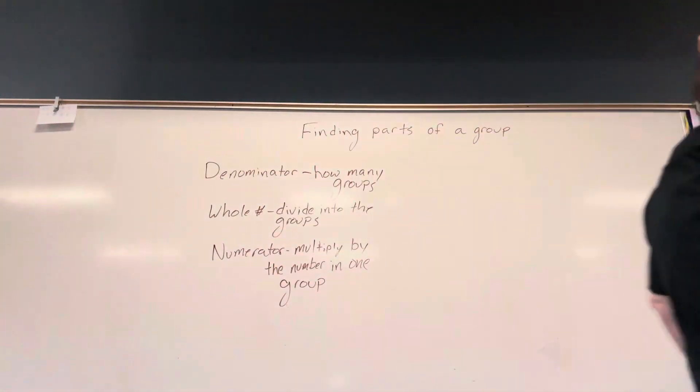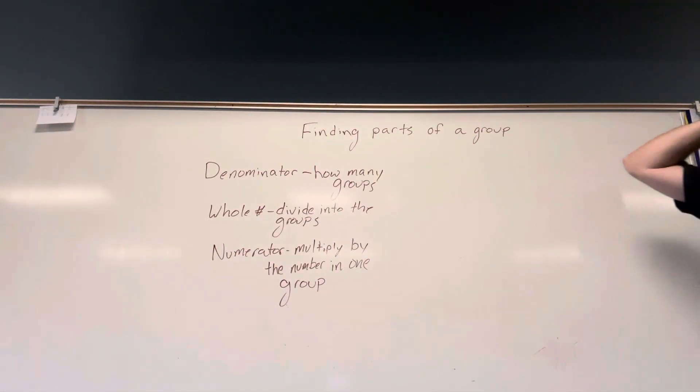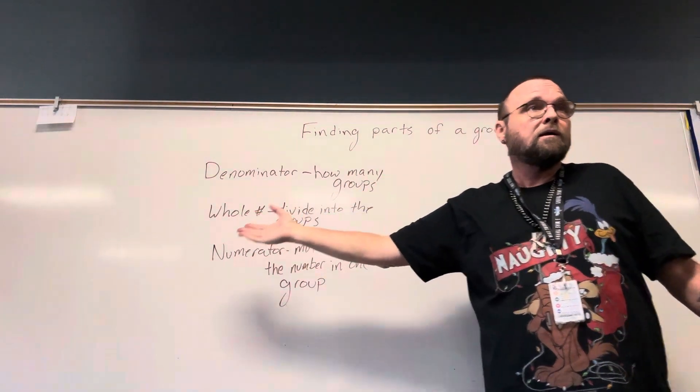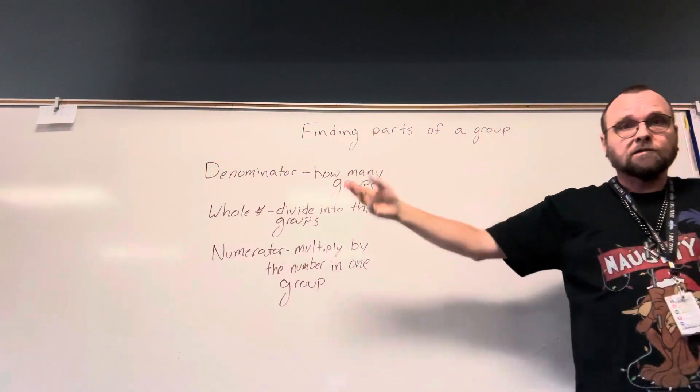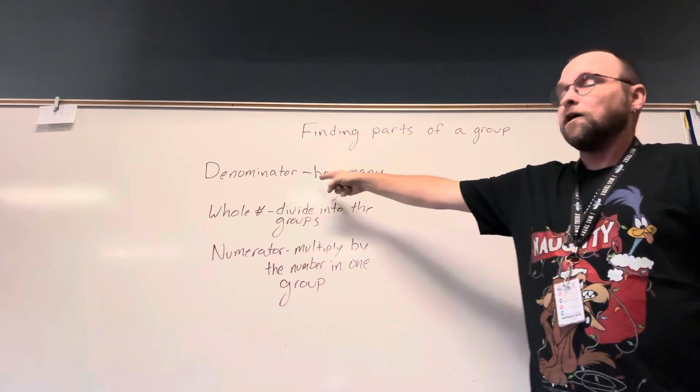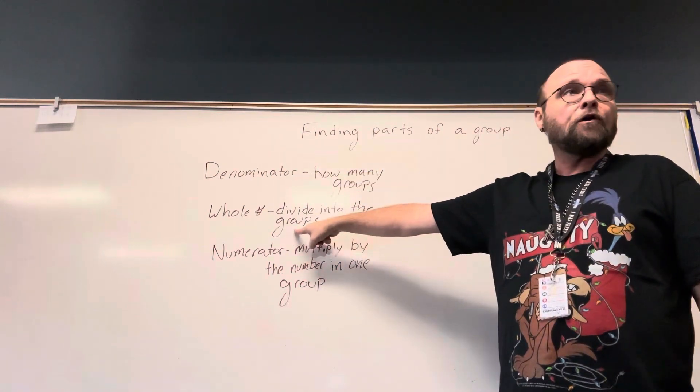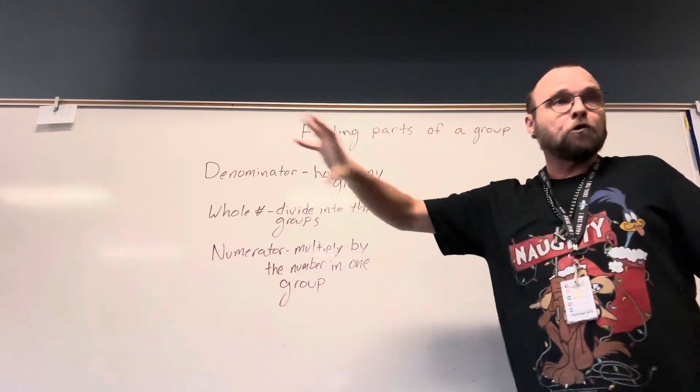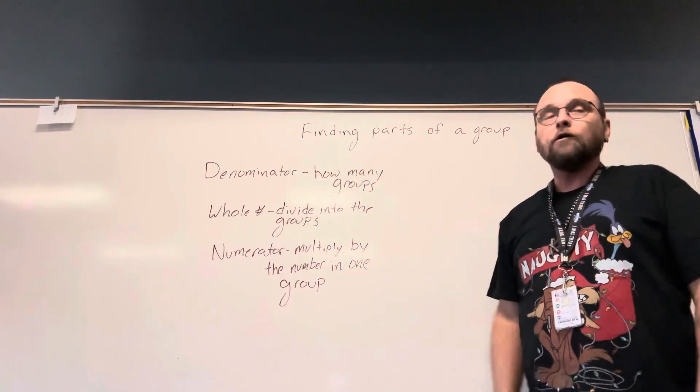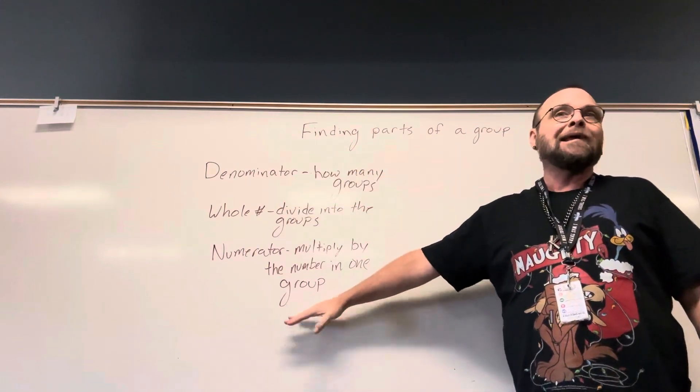All right, so finding parts of a group. This is easy. That's all I can say. This is easy. Denominator tells you how many groups. The whole number, you're dividing that amongst those groups. The numerator, you multiply that by the number in each group, or in one group.